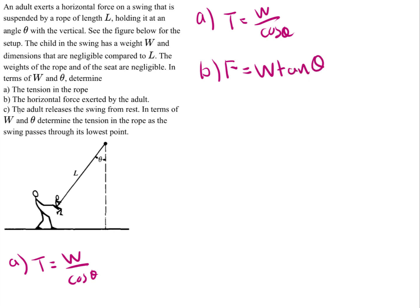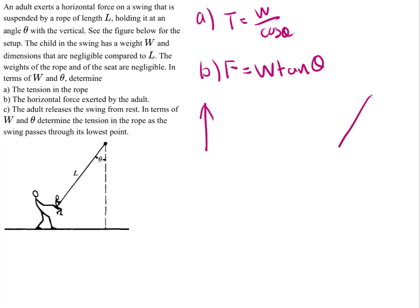Part C says that the adult releases the swing from rest. In terms of the child's weight W and theta, determine the tension in the rope as the swing passes through its lowest point. Let's draw a free body diagram of the child passing through the lowest point. When the adult releases him, he's going to start undergoing circular motion. At the very bottom of the swing, the only two forces acting on him are the force of tension and the child's weight, mg.